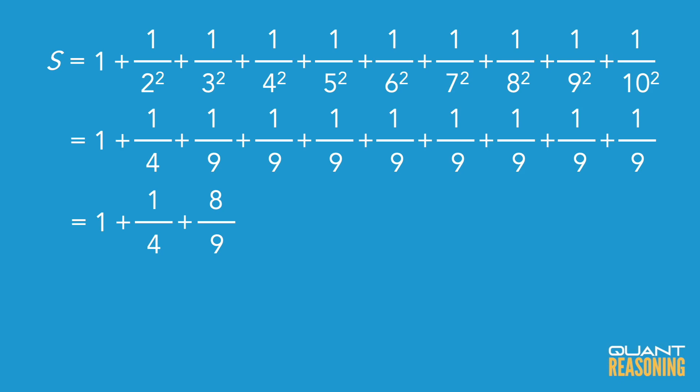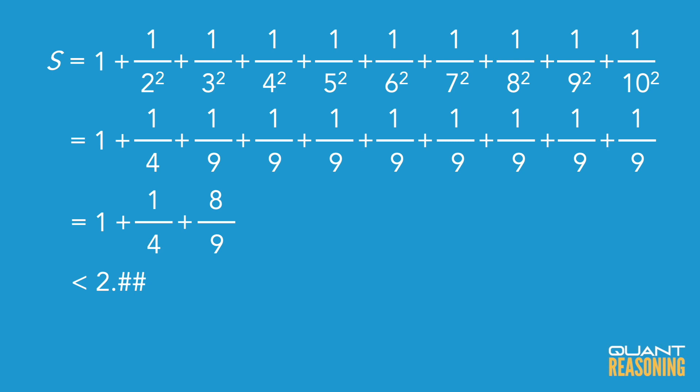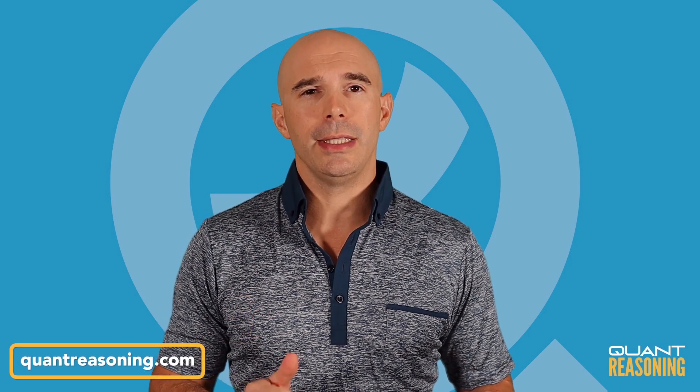So we had one and a quarter plus another eight ninths — that tells me the answer has to be less than one and a quarter plus eight ninths, which is just over two. So the answer is smaller than two point something. Unfortunately, that still leaves us with three answer choices: C, D, and E.